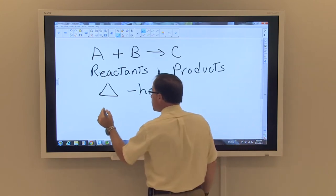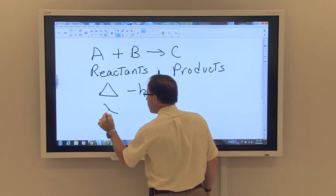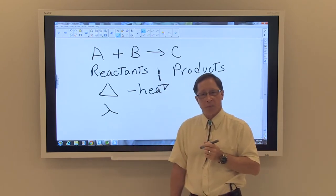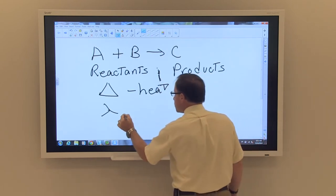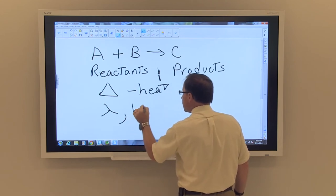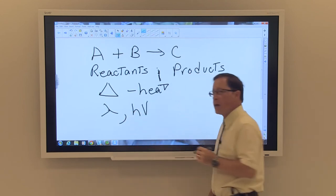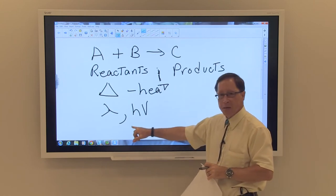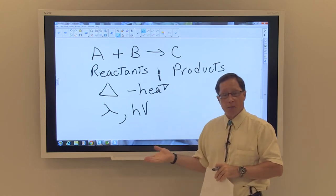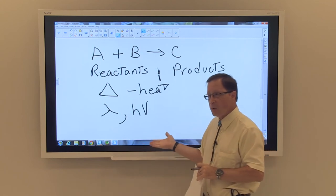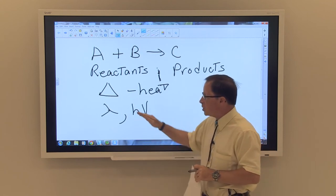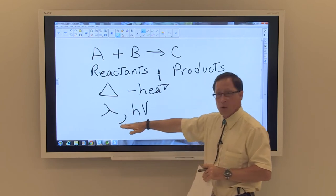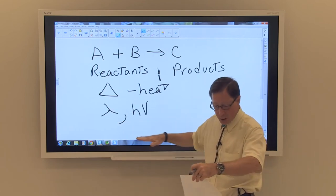You may see something like this, and that is a symbol for a wavelength. You may also see this represented as something that looks like an H and a V, but this is actually H nu, which is also a form of light. So in this instance, instead of using heat to cause a reaction to occur, you will use light to cause the reaction to occur.